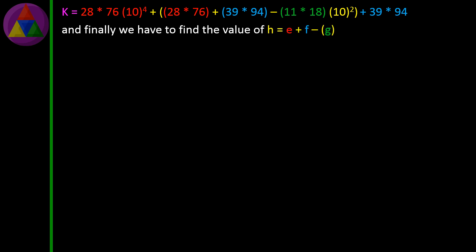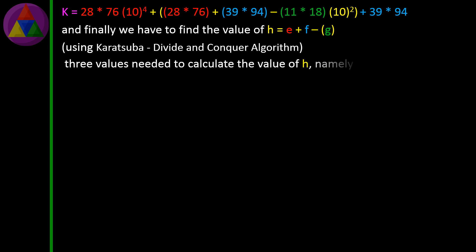Finally, we have to find the value of H = E + F − G using the Karatsuba divide and conquer algorithm. Three values are needed: E = 2128, F = 3666, G = 198.